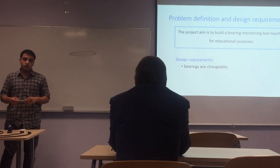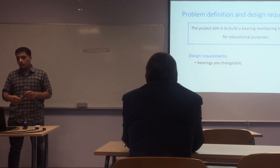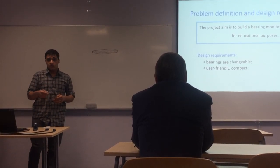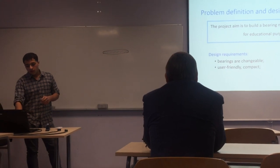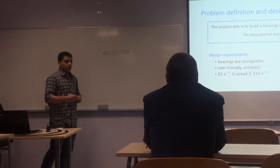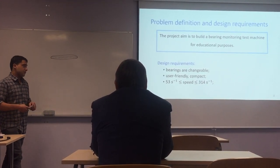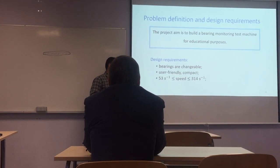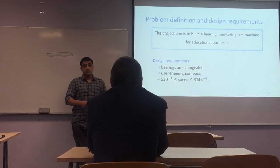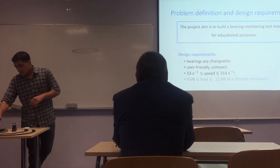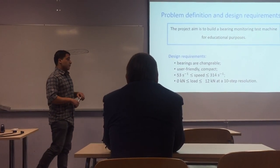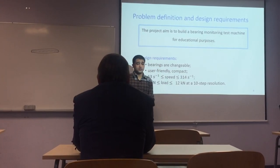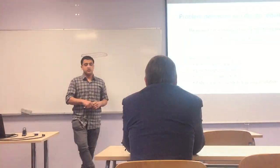The design requirements were obtained from the end customer, who is the professor. First, the bearings should be changeable so we can test different bearings. The machine should be user-friendly and compact since the users are students. We can change the speed from 500 rpm to 3000 rpm, which is 53 to 314 radians per second. Finally, the load should be changeable from 0 to 12 kN at a 10-step resolution, so 1.2 kN for each step.